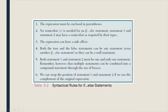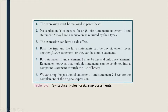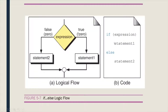Rule three: the expression can have a side effect, because there are statements that will not be executed. If the expression is true, statement one will be executed; if the expression is evaluated to false, statement two will be executed. Rule four: both the true and false statements can be any statement, even another if-else statement, or they can be a null statement. Inside the if statement can be included another if-else statement.